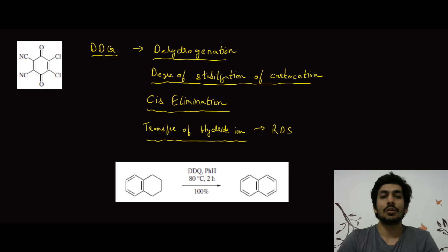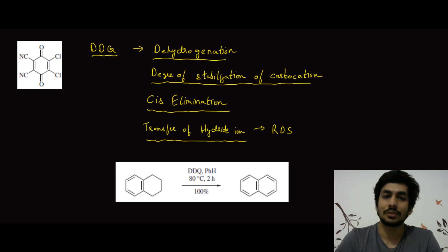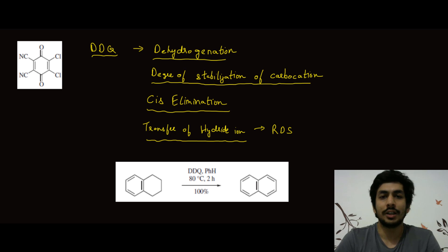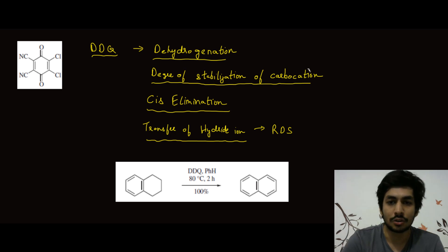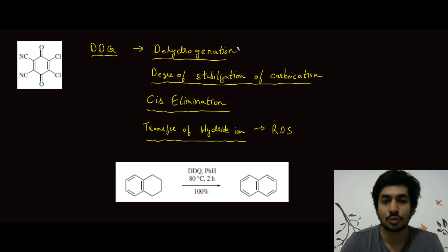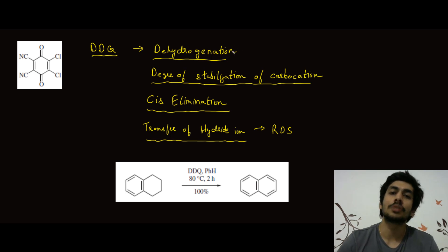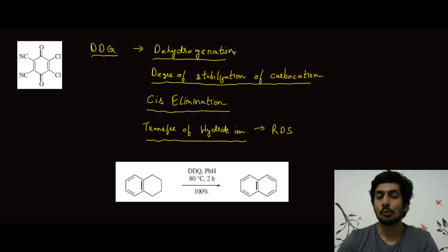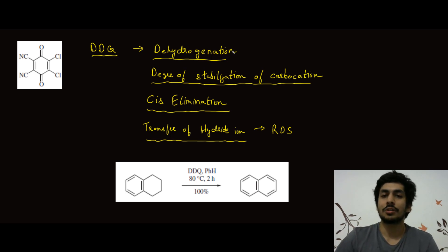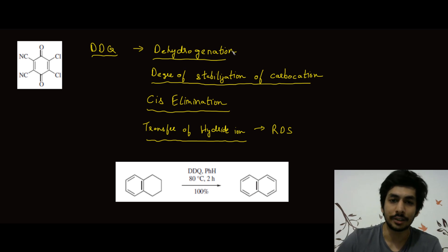In today's reagent chemistry we are going to discuss a very popular reagent — DDQ, that is 2,3-dichloro-5,6-dicyano-benzoquinone, or you can just call it DDQ or dichloro-dicyano-quinone. It shows a lot of reactions; for example, dehydrogenation, which is the most important. I will discuss why dehydrogenation is most important and how we can use it to resolve each and every question that comes from DDQ.